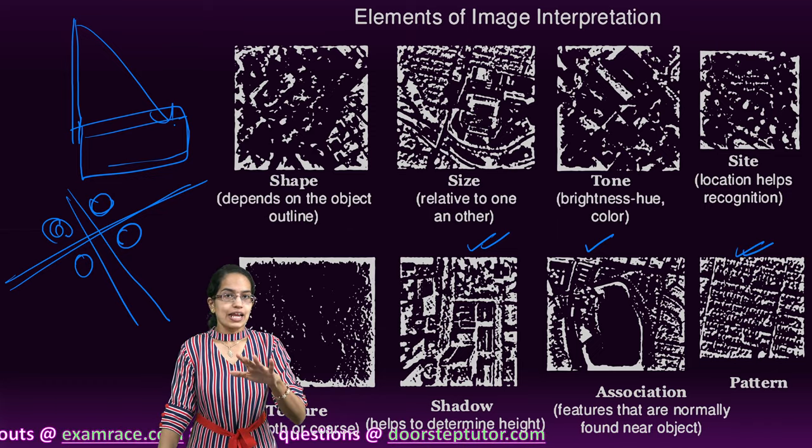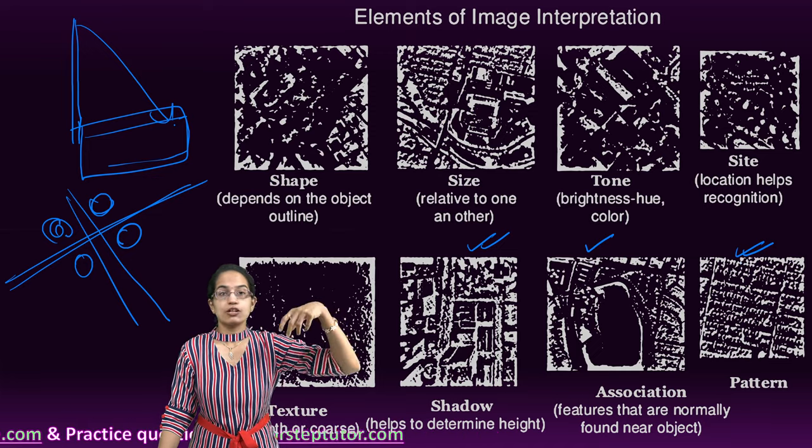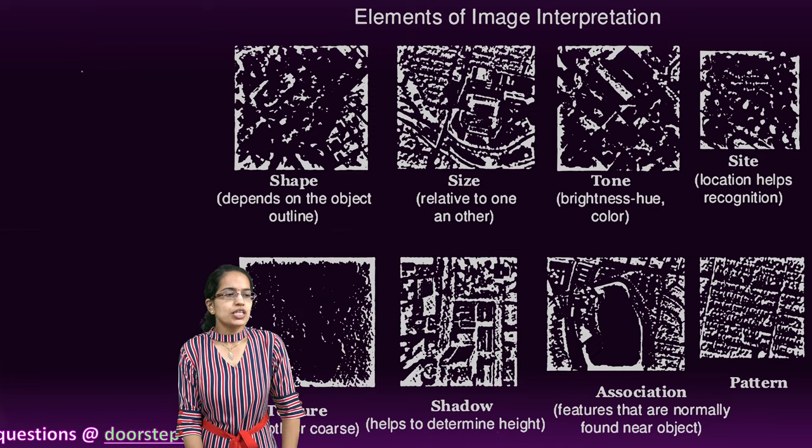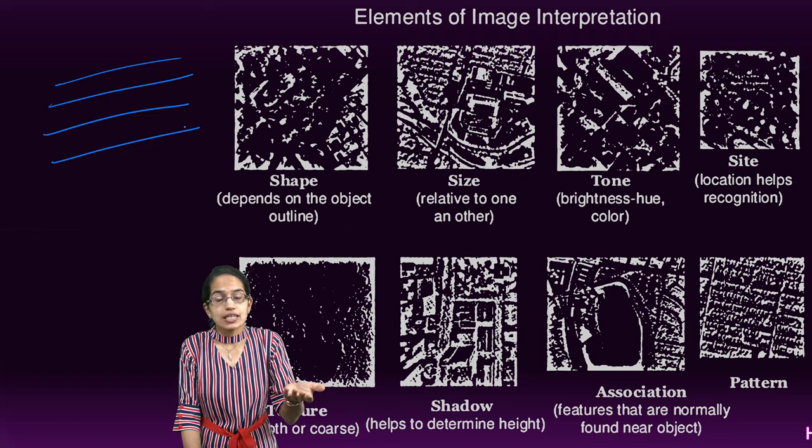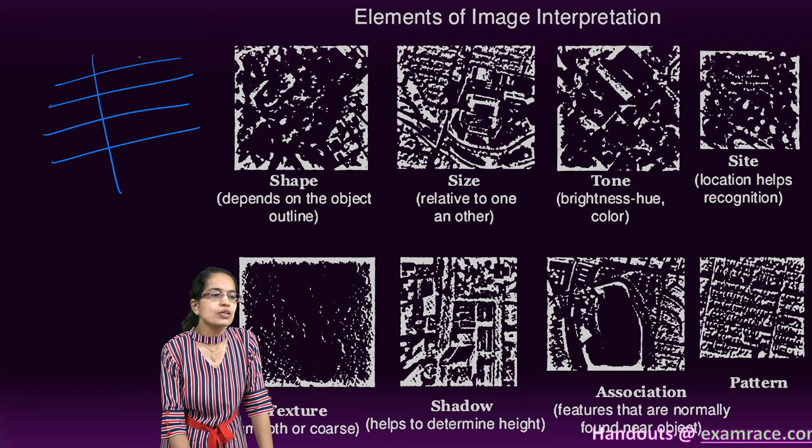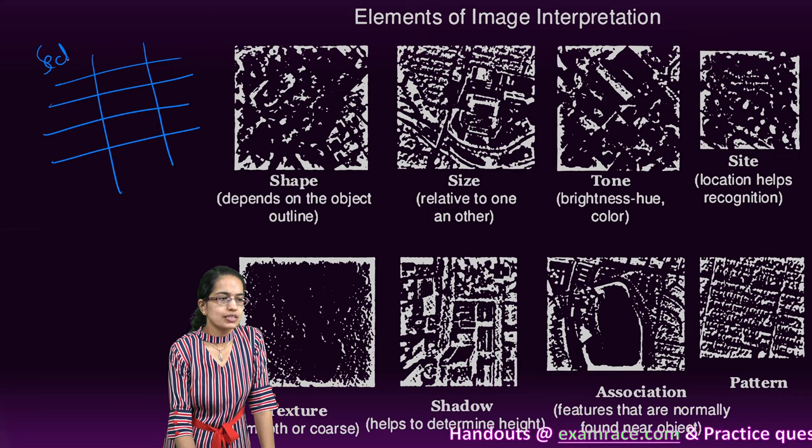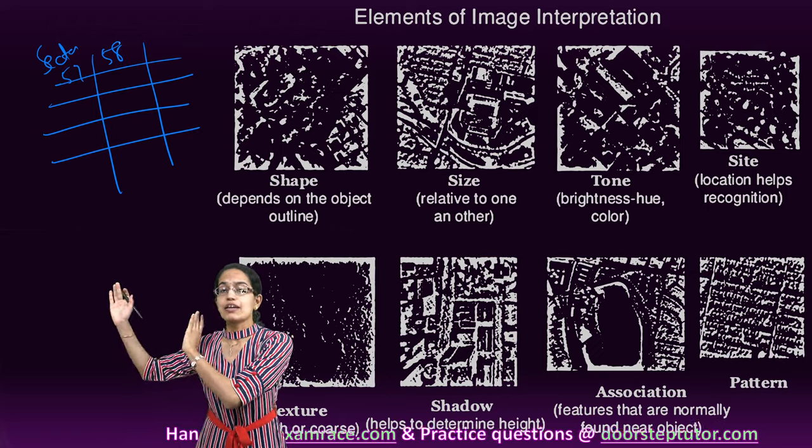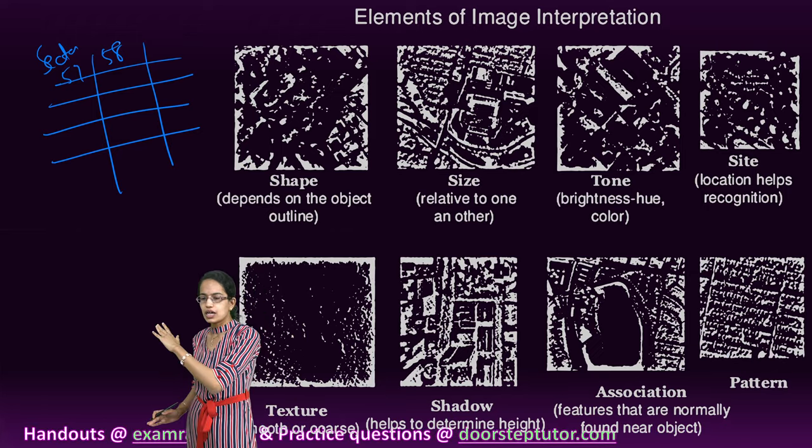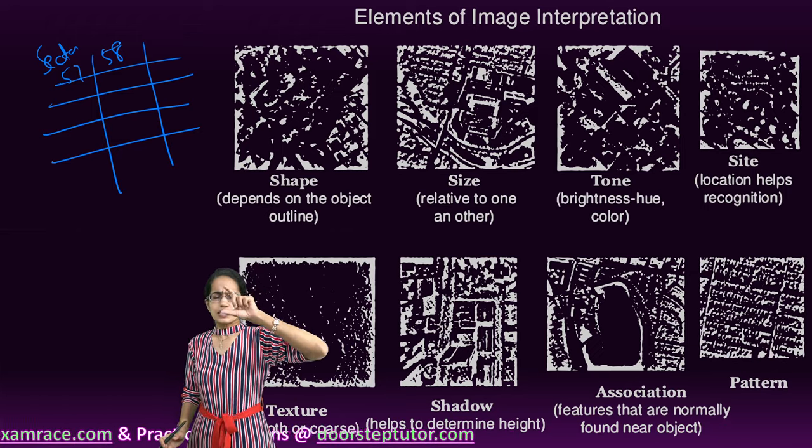And finally, we have a pattern. Pattern explains us the layout. If I take a picture of Chandigarh probably, I would see all the sectors that are clearly demarcated. Chandigarh, Gandhinagar are good examples. I would have a good pattern where I would say this is sector 57, this is sector 58 and each of the sectors are well demarcated one after the other and this gives us a pattern.